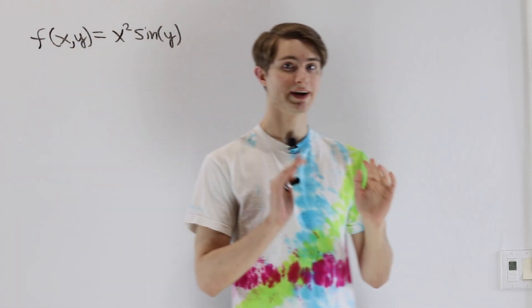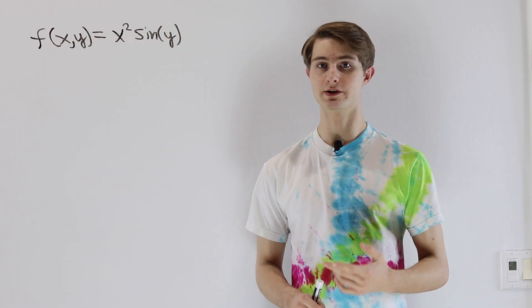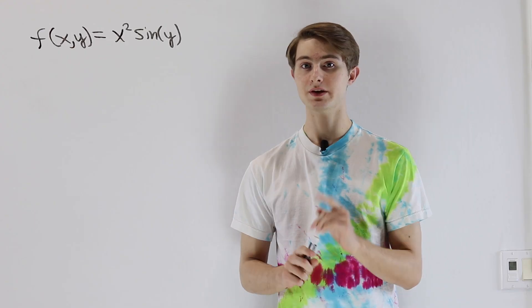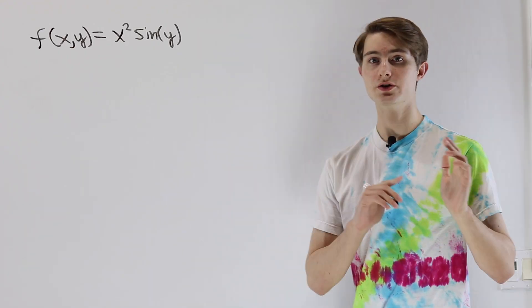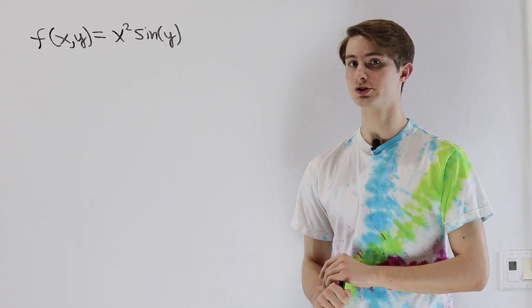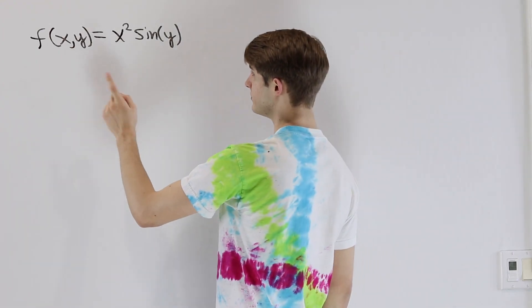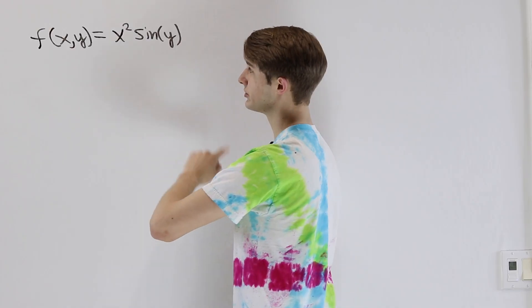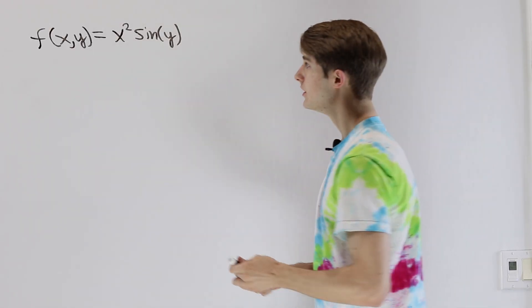We are going to look at higher-order partial derivatives and an intuitive explanation for Clairaut's theorem. To start out, let's take a look at what those higher-order partial derivatives look like in the case of f(x, y) = x² sin(y).